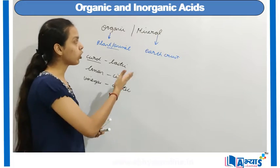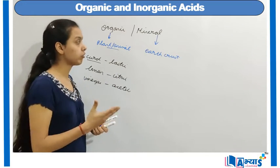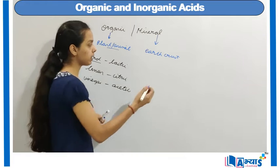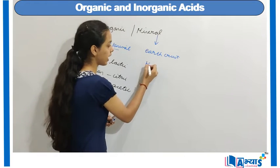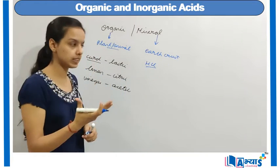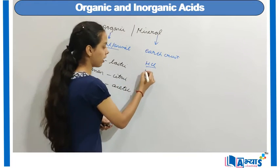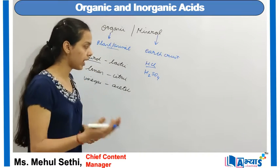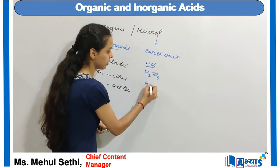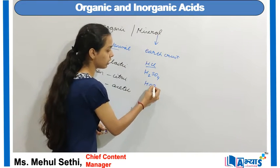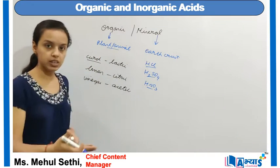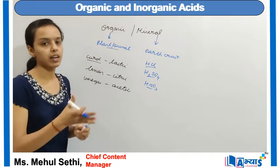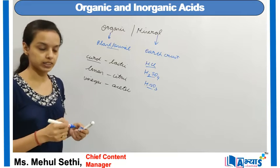If we talk about mineral acids, which are obtained from the earth's crust, the best example is hydrochloric acid, that is HCl. We also have sulfuric acid and nitric acid. Since all these acids are obtained from minerals found in the earth's crust, they are referred to as inorganic acids.